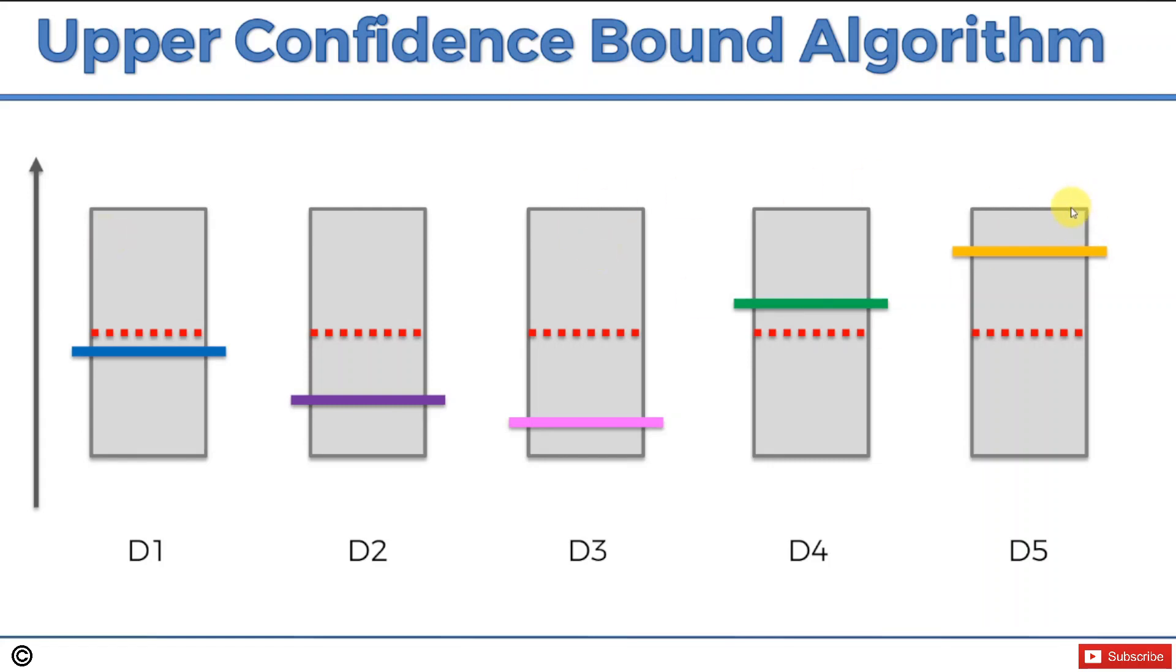Out of all of them, we pick the machine with the highest confidence bound. Right now, it can be any of these machines. They all have the same confidence bound. We're talking about the upper confidence bound. That's why the algorithm is called the upper confidence bound. We're just going to pick any one of them because it doesn't matter which one we pick.